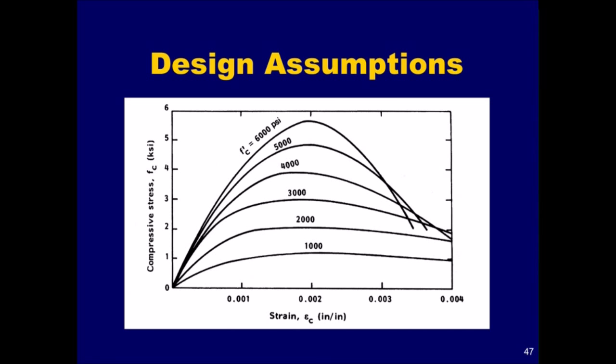Higher strength concretes have a more linear shape with less inelastic behavior. For a good approximation of the stress block for concretes with compressive strengths greater than 4000 psi, the ratio beta-1 of the rectangular stress block depth to the neutral axis depth needs to be reduced.